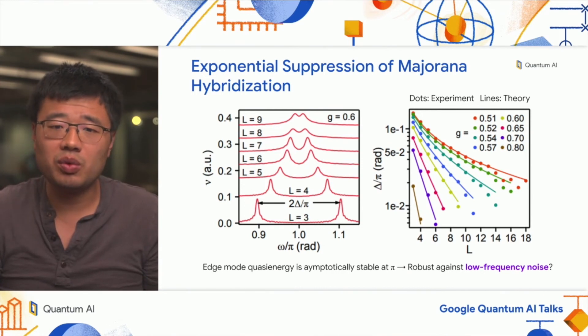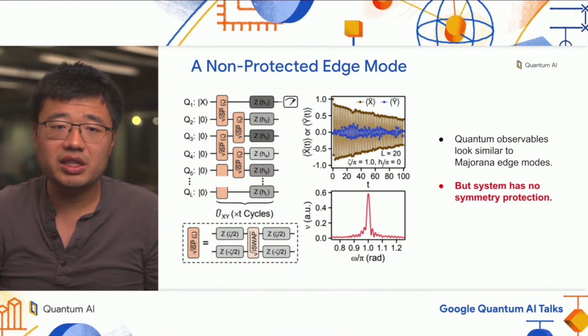This begs the question: in the regime where this splitting is highly suppressed, can we demonstrate some sort of low frequency noise resilience for these edge modes? There, the quasi energy will be rigidly locked to pi, and supposedly fluctuation in the environment is not able to perturb it away from that stable value. To make that point more clear, we experimentally realized another sort of edge mode, which does not have symmetry and is not protected by the same Majorana physics.